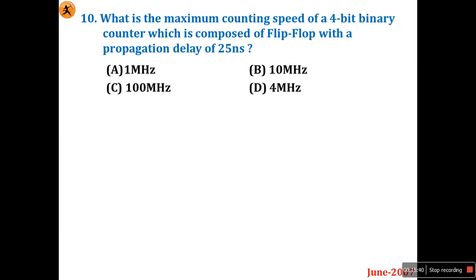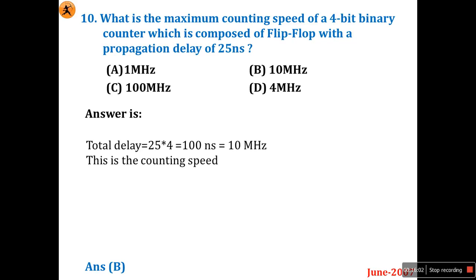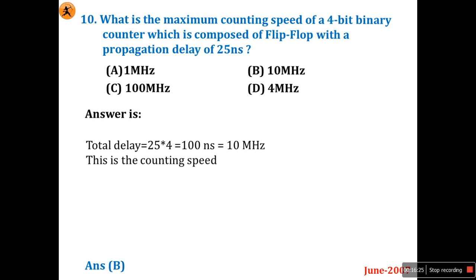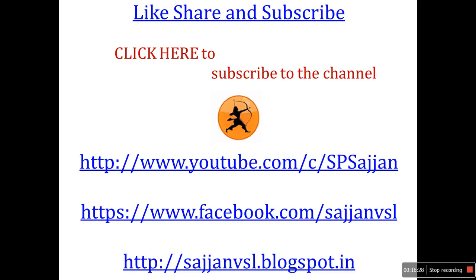Question ten: maximum counting speed of a 4-bit binary counter with flip-flops having propagation delay of 25 nanoseconds. Total delay = 25 × 4 = 100 nanoseconds. Converting to frequency: 1 / 100ns = 10 MHz. So the maximum counting speed is 10 MHz. Option B is the right answer. I hope you enjoyed this lecture series — please share, subscribe, and inform your friends. Thanks for watching.